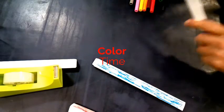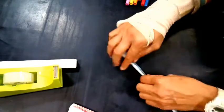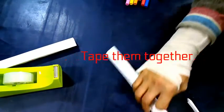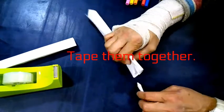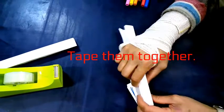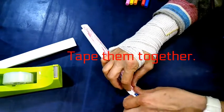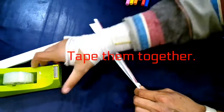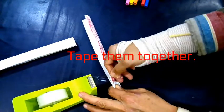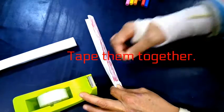Perfect. Now that they're colored, you're going to be taping the ends of them together. So I have my blue one and I have my red one. I'm going to overlap them by a little bit. And then I'm going to take my tape and I'm going to tape them together.